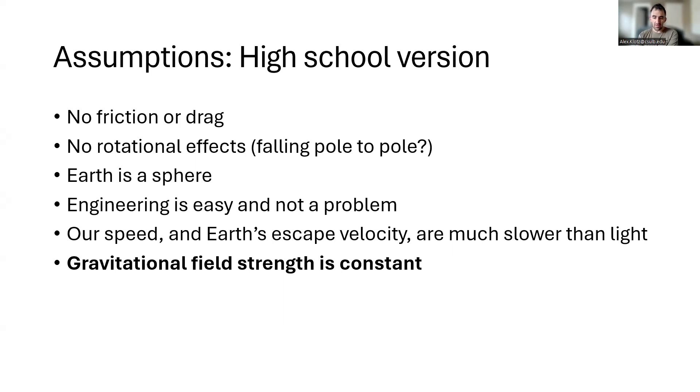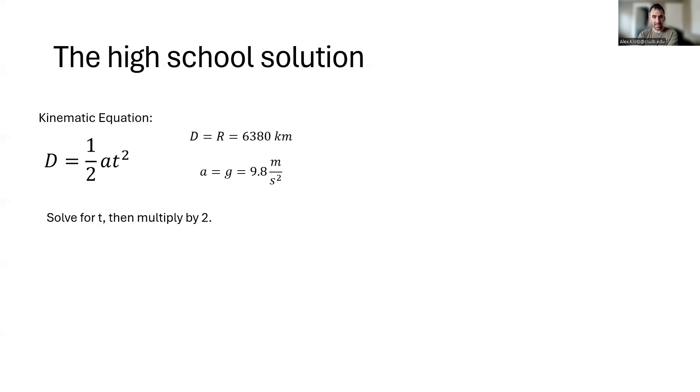So that lets us write down the kinematic equation we've learned that relates the distance traveled to the time we spend accelerating. And here the distance we want to go is the radius of the earth, so about 4,000 miles. The acceleration is just little g, and this will give us the time if we solve for t that it takes to reach the center, and we double that to find the time it takes to reach the other side.